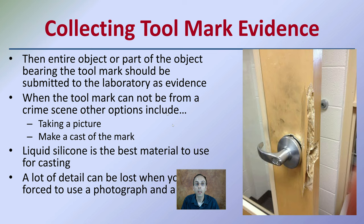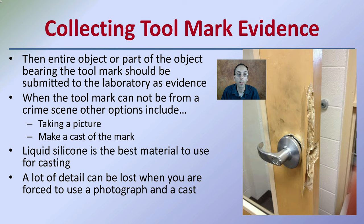When collecting tool mark evidence, the entire object or part of the object bearing the tool mark should be submitted to the laboratory. When the tool mark cannot be removed from the crime scene, other options such as taking a picture or making a cast should be implemented. Liquid silicone is the best material to use for casting, though a lot of detail can be lost when forced to use a photograph or cast. So it's best to have the actual object, but something is better than nothing.